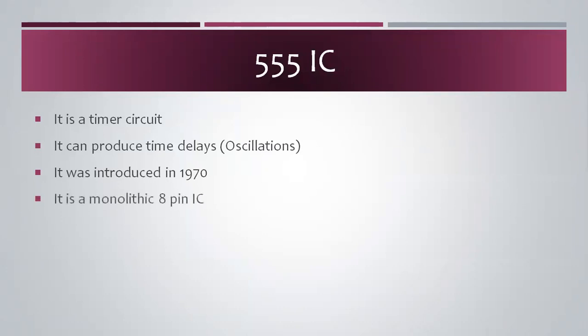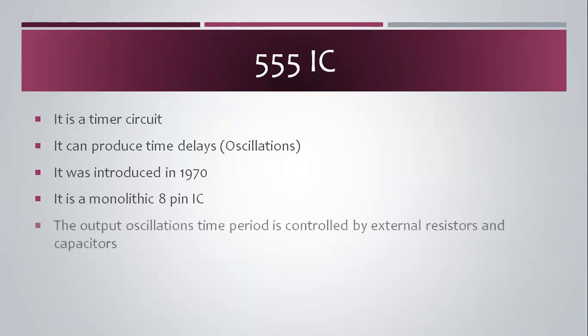It is a monolithic 8-pin IC. In this 555 IC, the monolithic manufacturing process is used. It is an 8-pin IC — we have 8 pins. The output oscillations are produced, and the frequency or time period is controlled by those output oscillations.